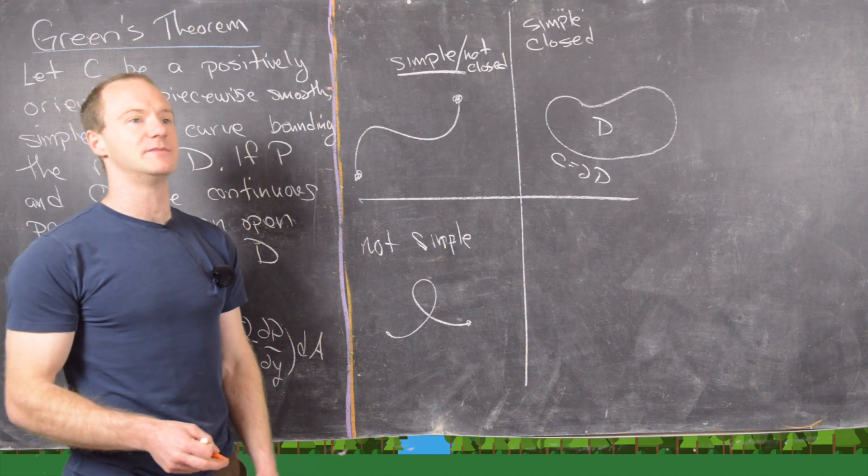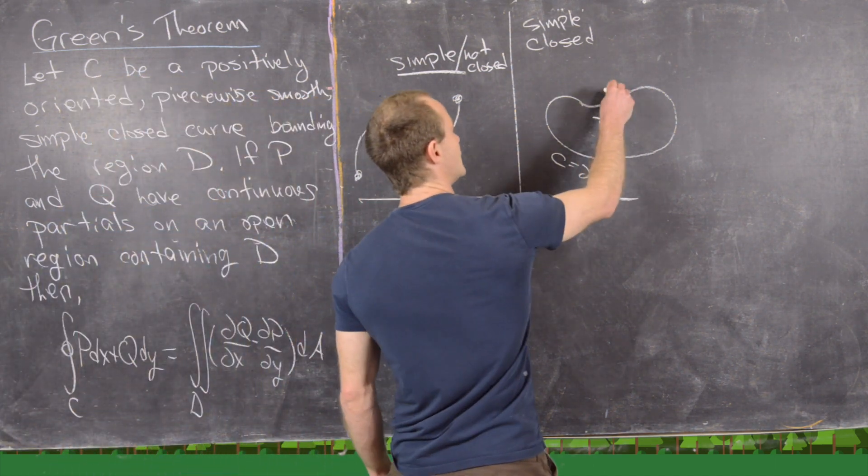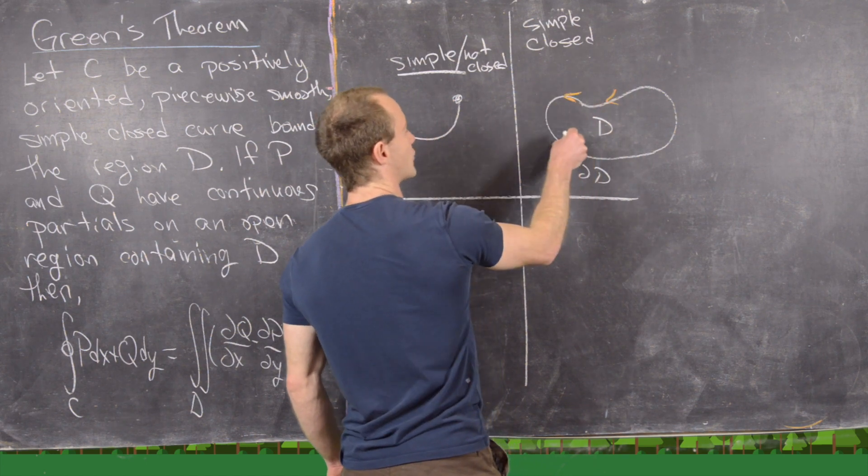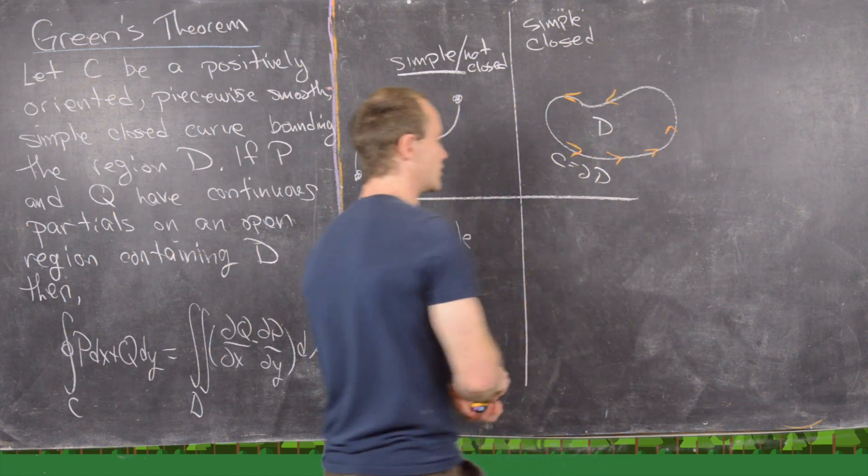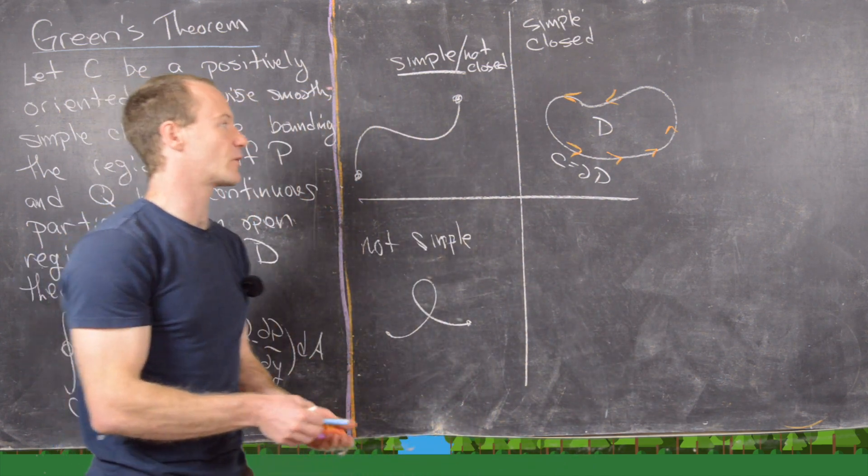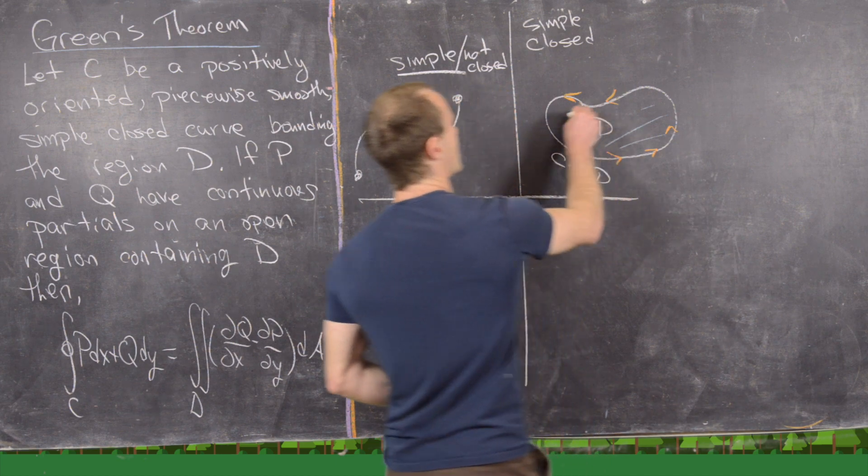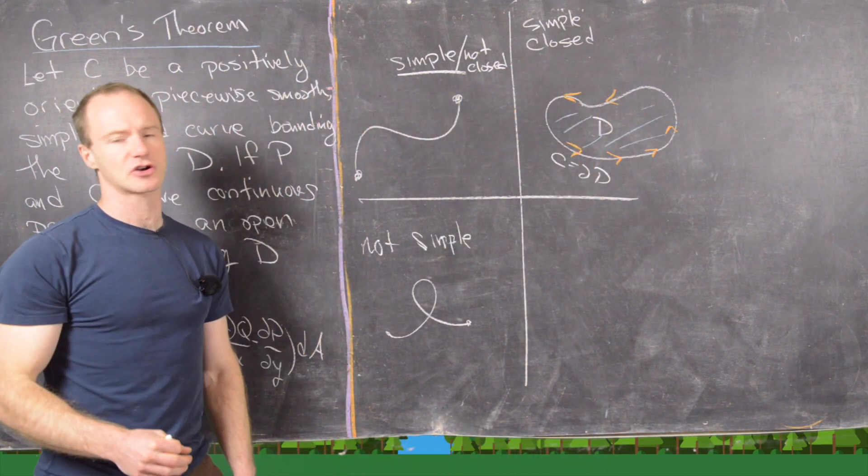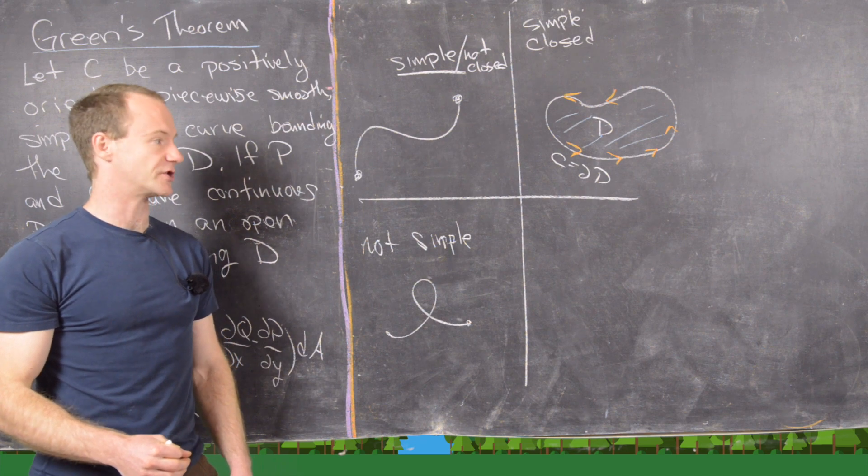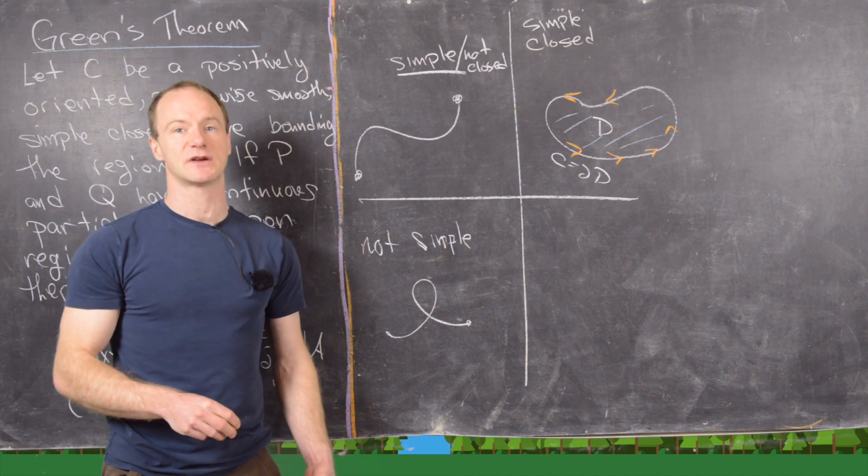And now that covers everything except for positively oriented. So positively oriented means you have parameterized the curve in a way so that if you walk in the direction of the parameterization, the region is on your left. So notice if we were to walk along that curve, the region D would be on our left. And so this is in general like a counterclockwise parameterization.